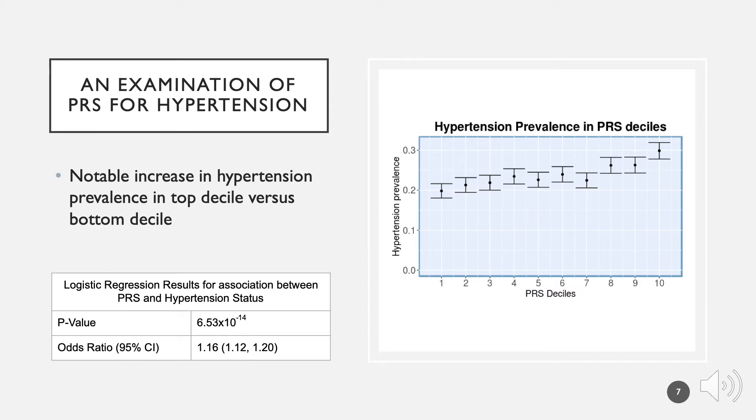We found notable association between hypertension and PRS. As you can see, we obtained a very significant p-value of 6.53 times 10 to the negative 14 and an odds ratio of 1.16. We also observed a notable increase in hypertension status between the top decile versus the bottom decile, meaning that high-risk participants had an increased prevalence of disease. This aligned with our hypothesis.